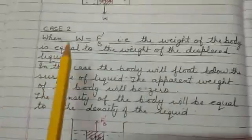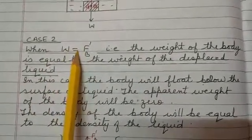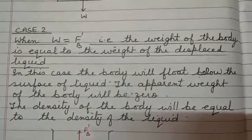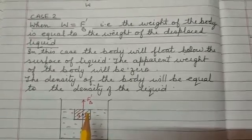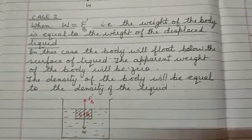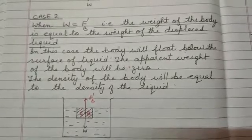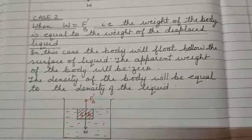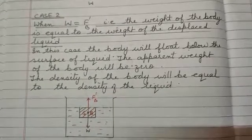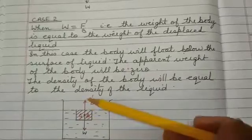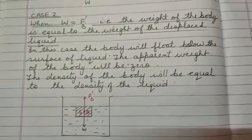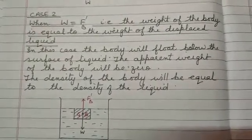Case two: when the weight of the body W is equal to the up thrust applied by the liquid. In this case, the body will float under the surface of the liquid, as shown in the second example. The apparent weight of the body will be zero, because W minus Fb equals zero. The body floats under the surface of the liquid. This occurs when the density of the solid and the density of the liquid are both equal.